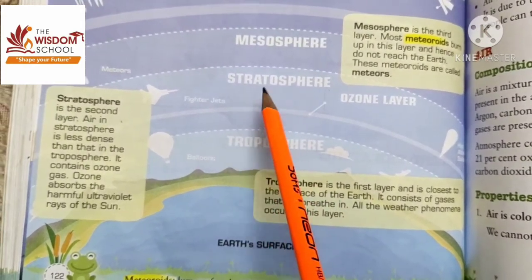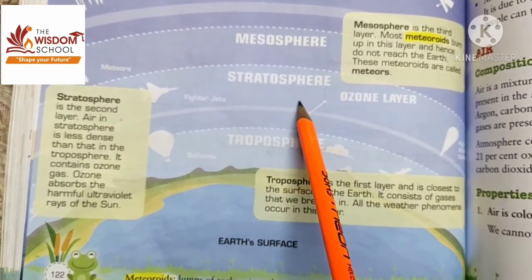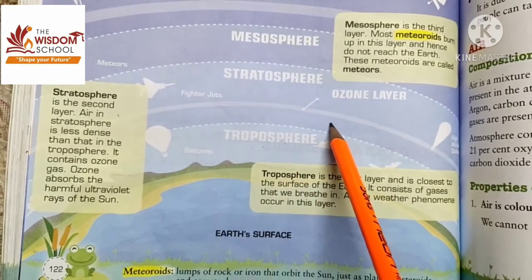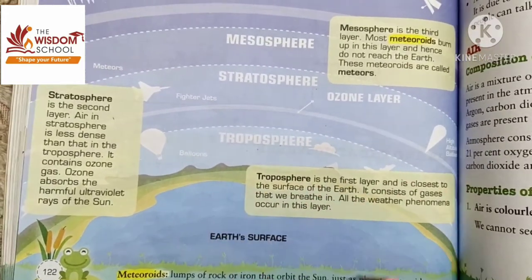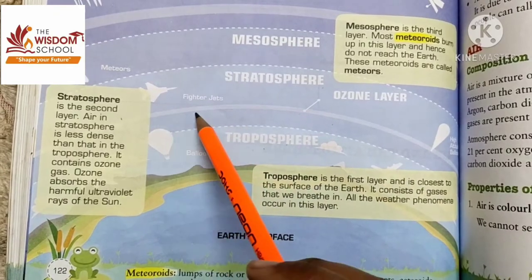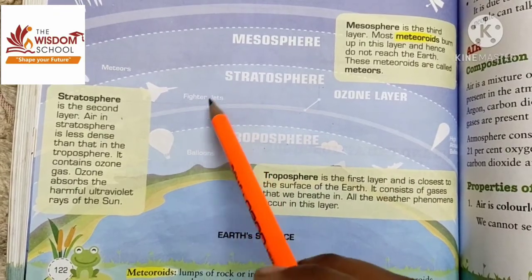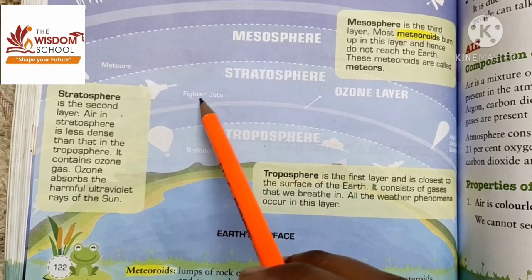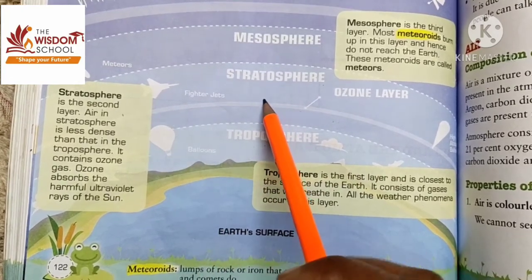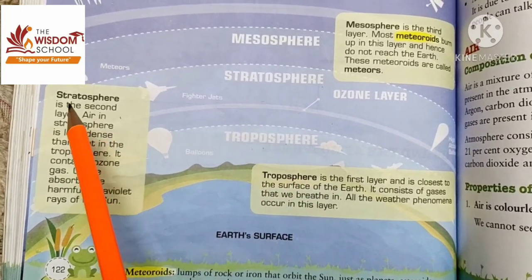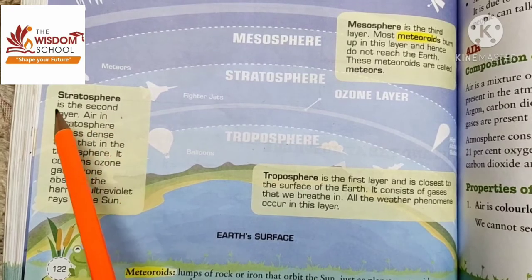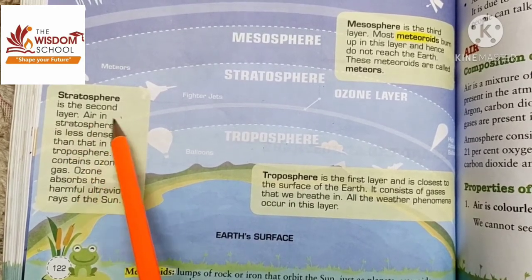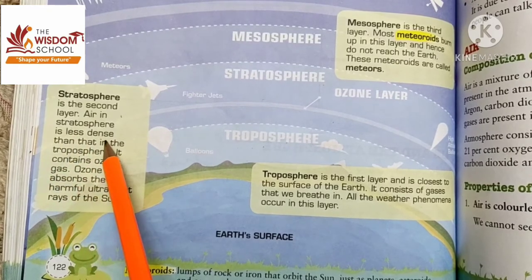The next layer is stratosphere. This is the ozone layer — you can see it just above, in the stratosphere. Fighter jets fly here. Stratosphere is the second layer, and air in the stratosphere is less dense.